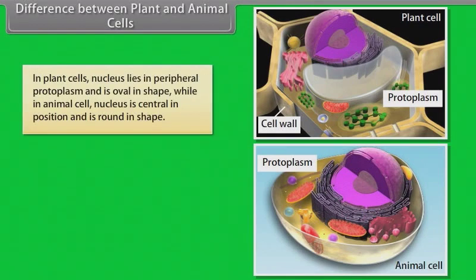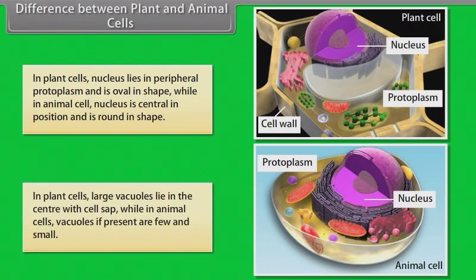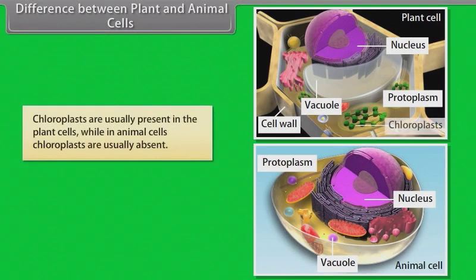In plant cells, large vacuoles lie in the center with cell sap, while in animal cells, vacuoles if present are few and small. Chloroplasts are usually present in plant cells, while in animal cells, chloroplasts are usually absent.